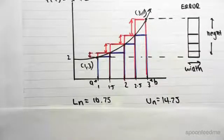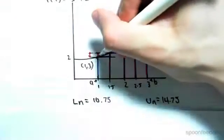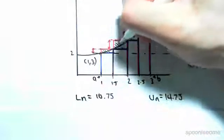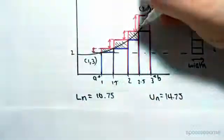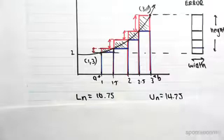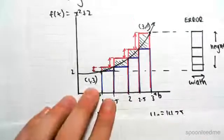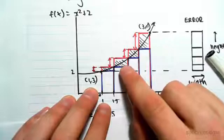So very simply, the error is just going to be the amount of area between the upper and lower Riemann sum. So I hope it's clear that there's obviously the actual area under the curve is going to be between the upper and lower Riemann sum.